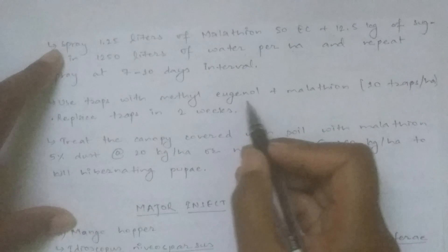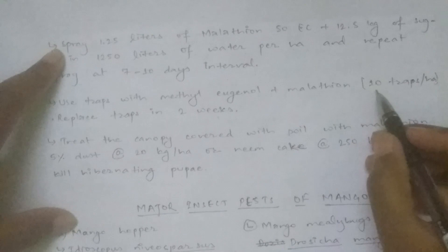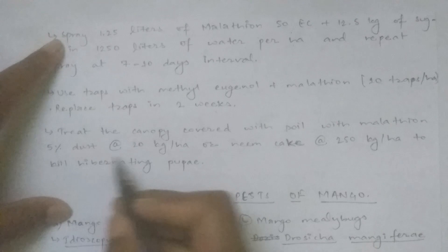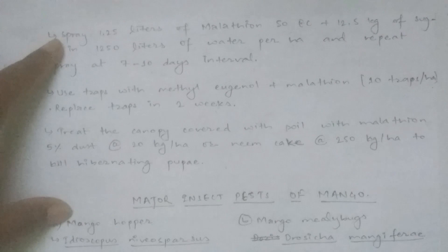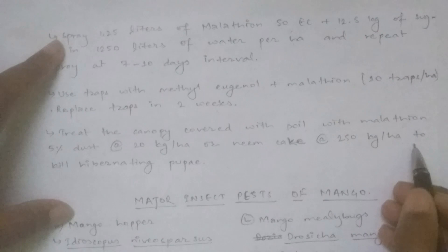Use traps with methyl eugenol plus malathion — 10 traps per hectare — and replace traps every 2 weeks. Treat the canopy-covered soil with malathion 5% dust at 20 kg per hectare, or neem cake at 250 kg per hectare.